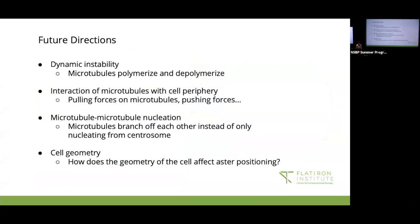So some things we want to look at in the future. First thing would be dynamic instability. Meaning we want to see the microtubules polymerize or depolymerize in the cell. I didn't do it. I just kept them at constant length. We want to see how the microtubules might interact with the cell periphery. Some pulling and pushing forces that might occur. Microtubule nucleation. So as I mentioned right now, microtubules only stem from the centrosome, but they're also able to branch out from each other. So we do want to experiment with that later. And we also want to talk about the cell geometry. Right now, it's just a sphere, but we do want to change the geometry and ask how might changing the geometry affect aster positioning.